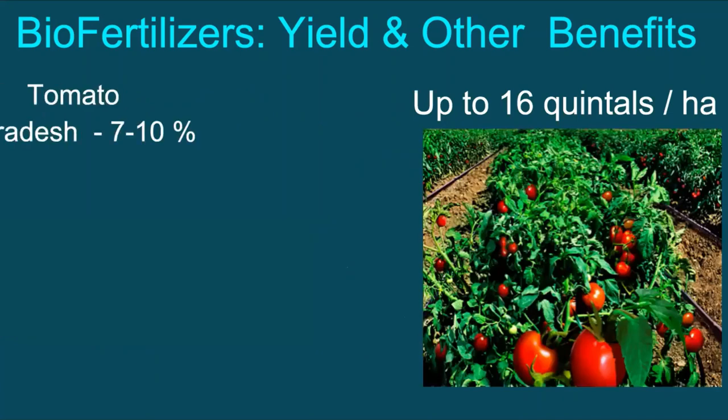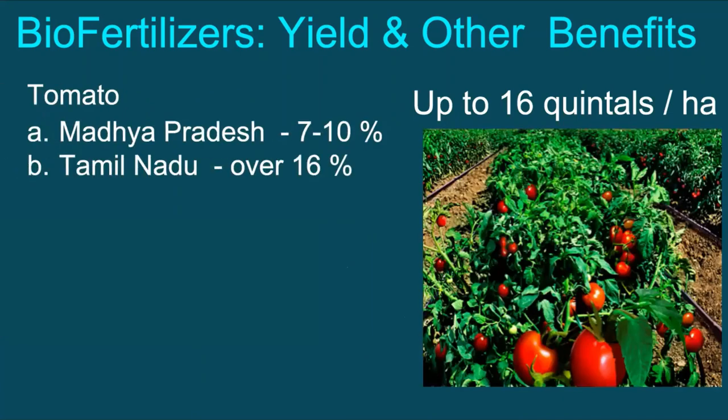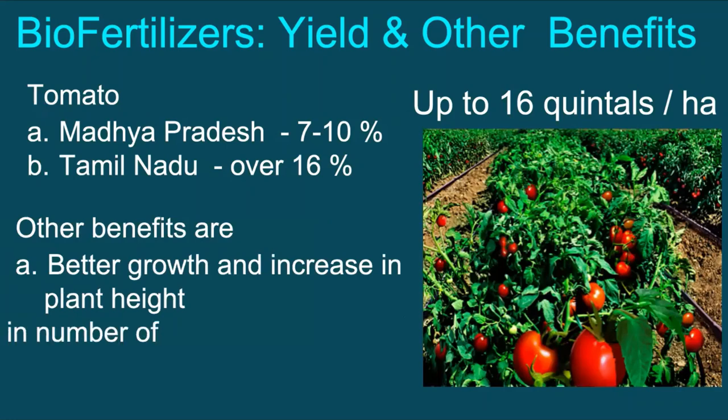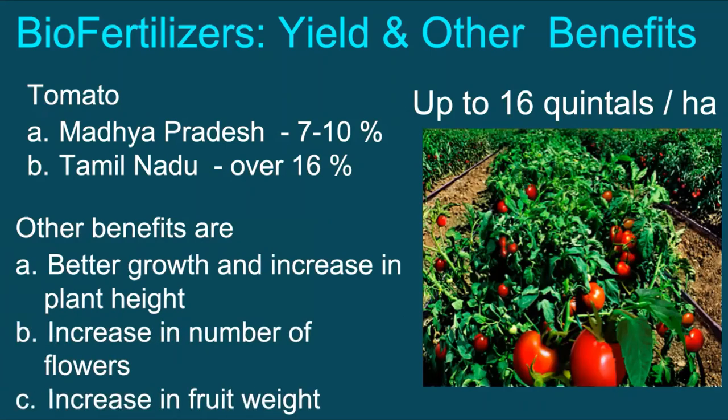In case of tomato, in Madhya Pradesh, the yield increased by 7 to 10%, while in Tamil Nadu, it increased over 16%. Other benefits are better growth and increase in plant height, increase in the number of flowers, and increase in fruit weight.